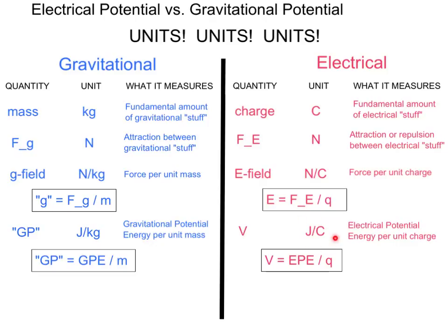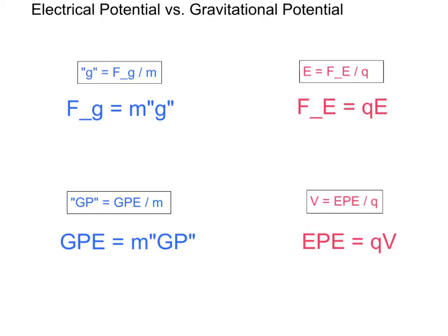Note that although I have used joules per coulomb for the units of electric potential to match up with joules per kilogram for gravitational potential, more commonly you will see the units of electrical potential as volts — one volt is one joule per coulomb. Simply by rearranging these equations, we can understand the usefulness of defining fields and potentials. Once we know the gravitational potential at a point, we can find the gravitational potential energy of any mass placed there just by multiplying by that mass. Similarly, if we know the electrical potential at a point, we can find the electrical potential energy of any charge placed there by multiplying by that charge q. We defined the g field so we could find the gravitational force on any object m placed there, and equivalently, we can find the electrical force on a charge if we know the electrical field E.